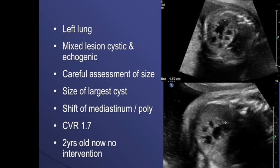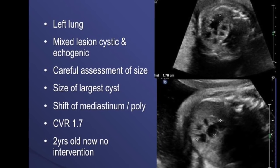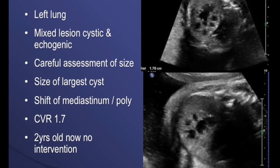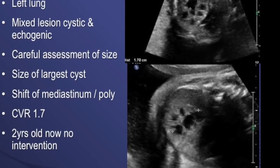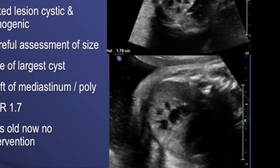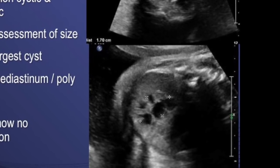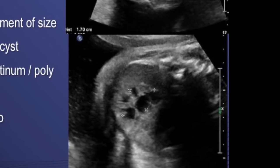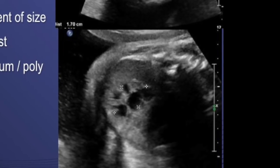This was another case of cystic CCAM or CPAM involving the left lung. This is a mixed lesion — cystic and echogenic. You have to do a very careful assessment of the size because some part is echogenic and you should include the entire lesion. There was a shift of mediastinum, there was polyhydramnios, and the CVR was 1.7. But this child is now 2 years old and there has been no intervention done.